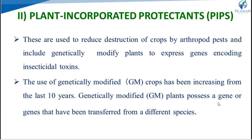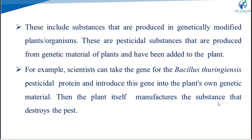Second category, plant incorporated protectants. These are used to reduce the destruction of crops by arthropod pests and include genetically modified plants to express genes encoding insecticidal toxins. The use of genetically modified crops has been increasing over the last 10 years. Genetically modified plants possess a gene or genes that have been transferred from a different species. These are pesticidal substances produced from genetic material that has been added to the plants. For example, scientists can take the gene for Bacillus thuringiensis pesticidal protein and introduce this gene into the plant's own genetic material, and then the plant itself manufactures the substance that destroys the pest.